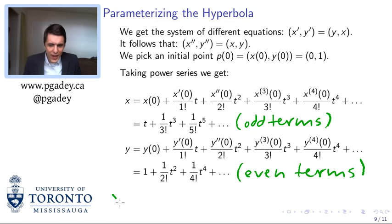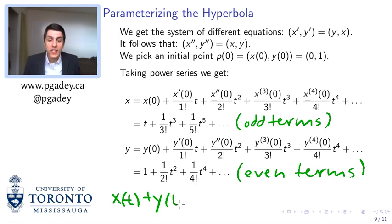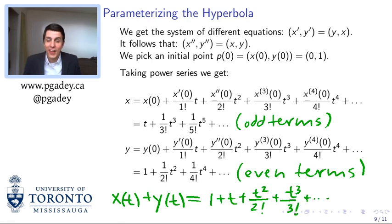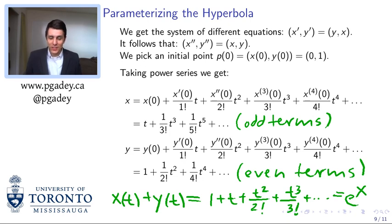Plugging in our values, we get that x only has odd terms and y only has even terms. These might not be the most familiar functions, but there's an interesting property: if we add x and y together, we're going to get all terms of the form t to the n over n factorial — and that's going to be the exponential function. So these two functions, when combined, give us the exponential function. That'll be helpful for the exercise that follows.